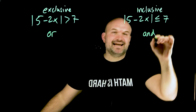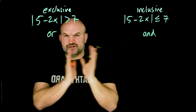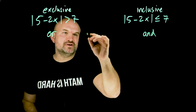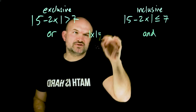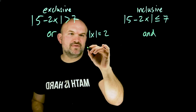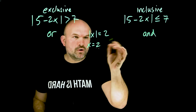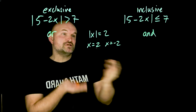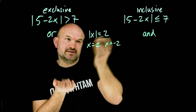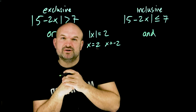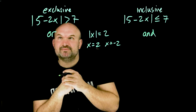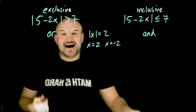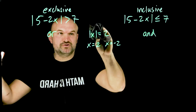When we have the absolute value of something — for instance, the absolute value of X equals two — we know that X could equal two or X could also equal negative two. Both of those solutions could be true, and we don't have enough information to know which one is going to be best. So when we have an absolute value, we need to make sure we take into account the positive as well as the negative solution.